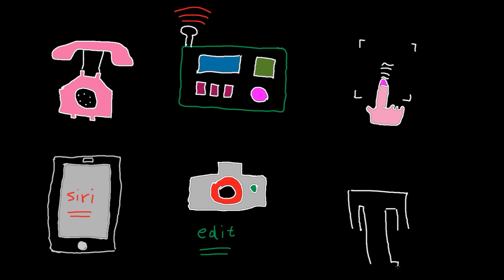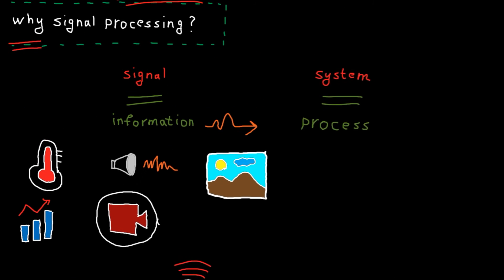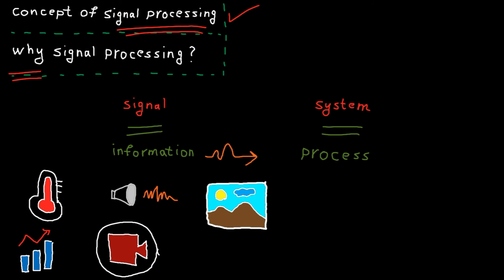All robots use signal processing techniques in one way or another — I could continue forever. As you can see, signal processing is the fundamental task in many many things and that's why we need to learn it.